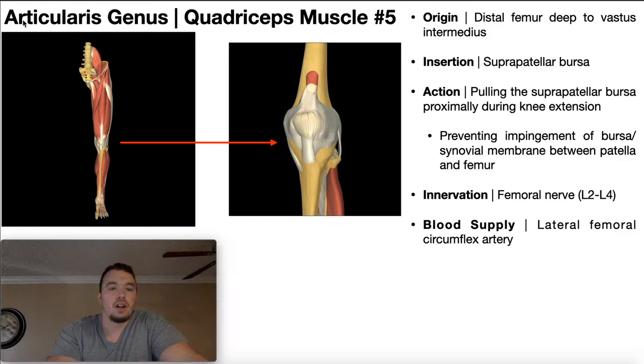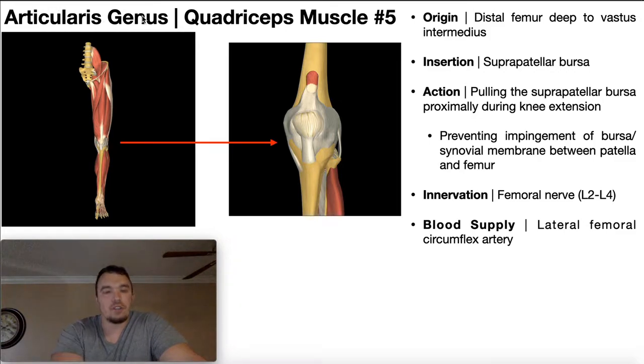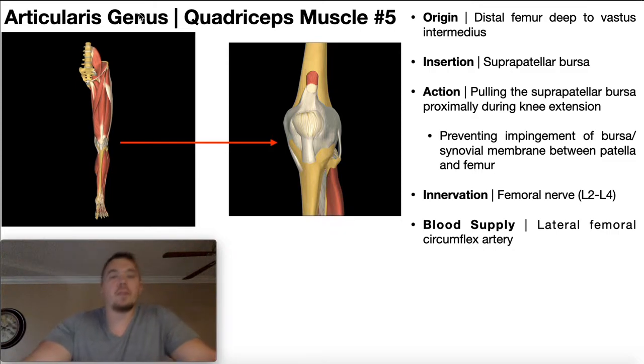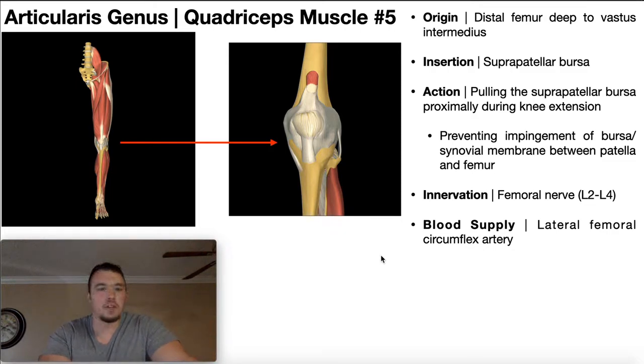That fifth muscle is called articularis genus — sometimes spelled articularis genu when you look it up online. So let's dive into this muscle and talk about its structure.